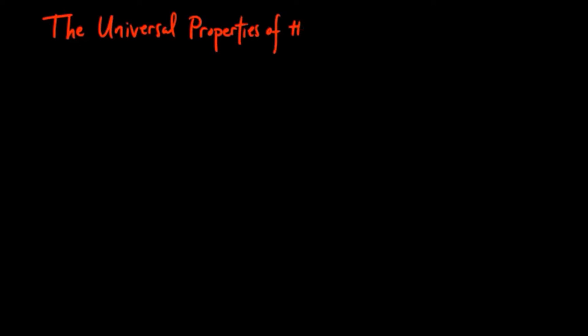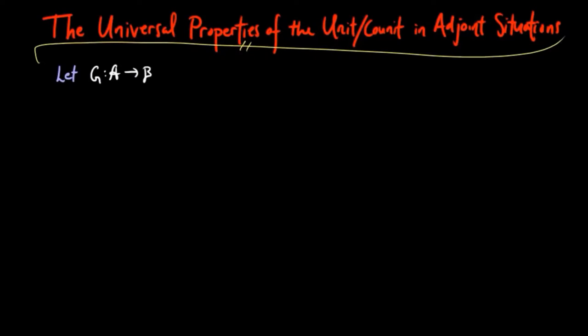In this section, we show that the unit and co-unit of the adjoint situations enjoy universal mapping properties. Throughout this section, G and F will be functors.